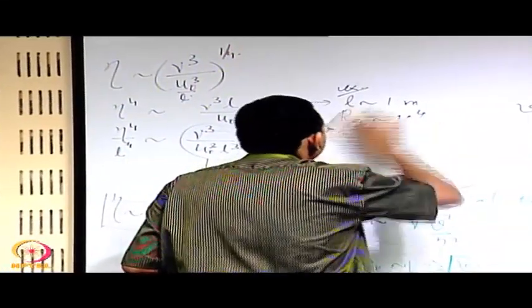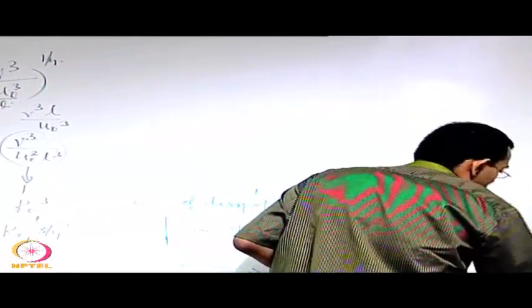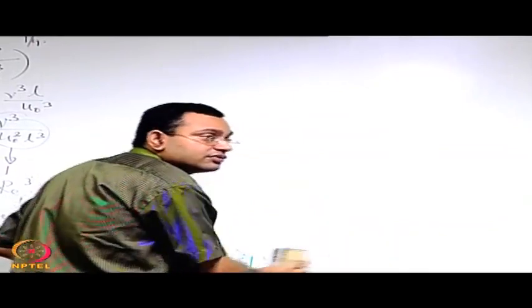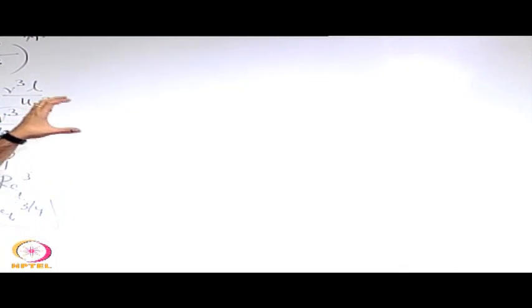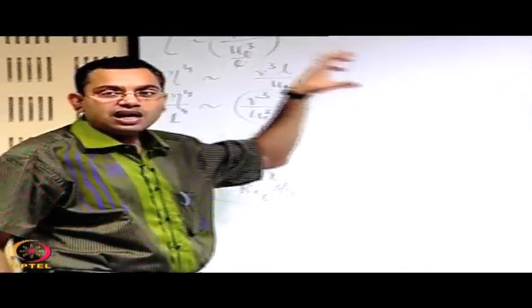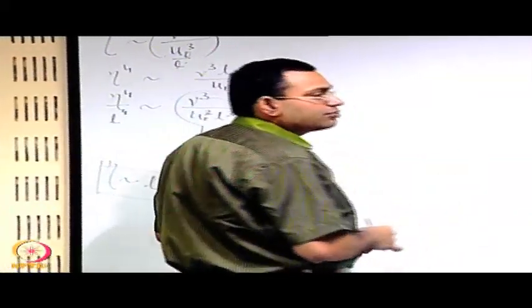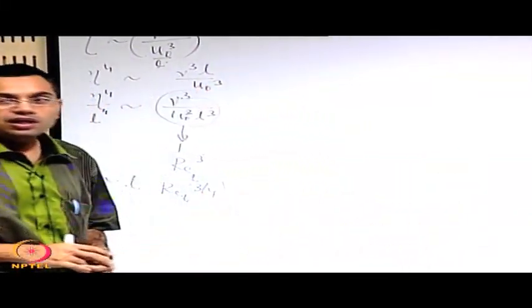Now we will try to understand another important thing: these eddies have rotations, and when they have rotations they must have vorticities. We will try to see how these vorticities evolve for these eddies and develop a governing equation for vorticity, understanding it qualitatively by considering the relative interaction between the large eddies and small eddies. Let us start with the vector form of the Navier-Stokes equation.